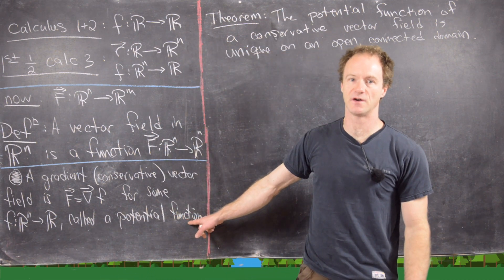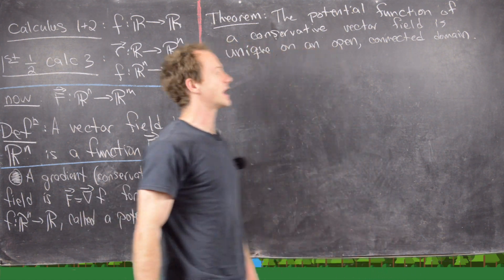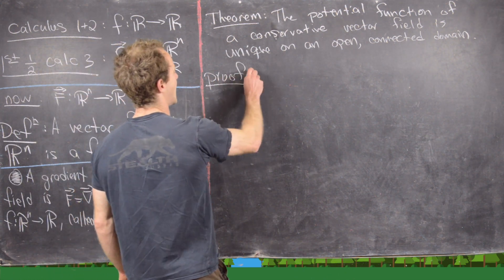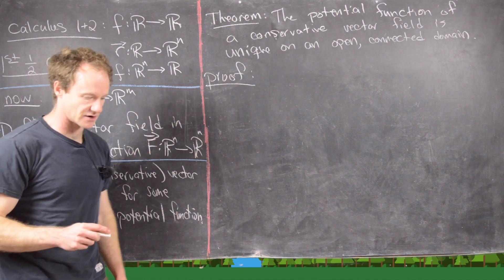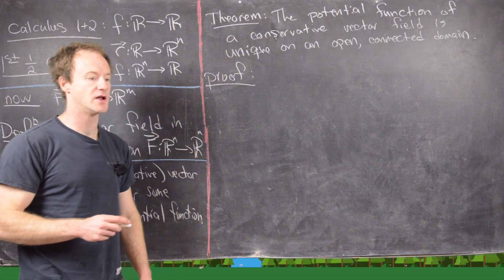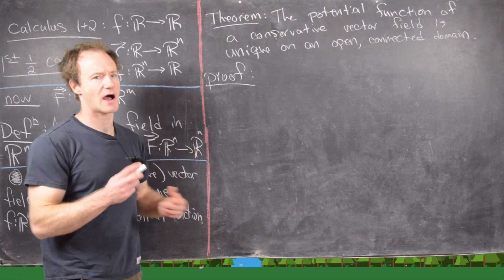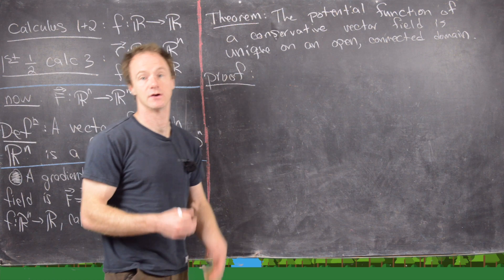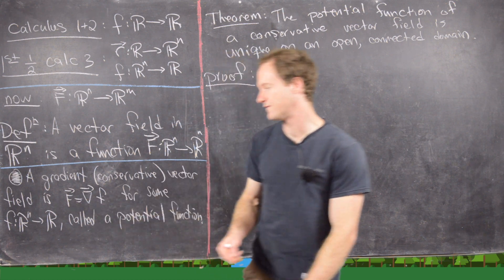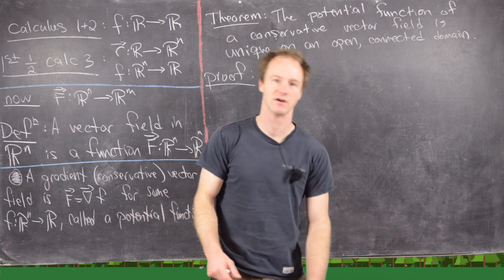The potential function is that special function such that when you take its gradient you produce the vector field. The analog in calculus 1 would be that the antiderivative of a function is unique up to a constant, which is why whenever you take an antiderivative you put plus C. You can think of finding the potential function as doing the opposite of the gradient, but the gradient is just a special type of derivative applied to a multivariable function.